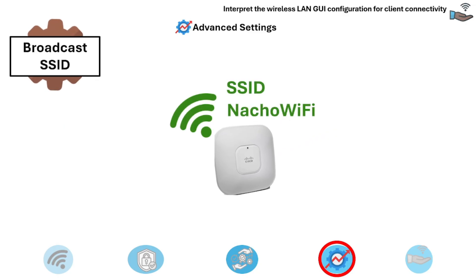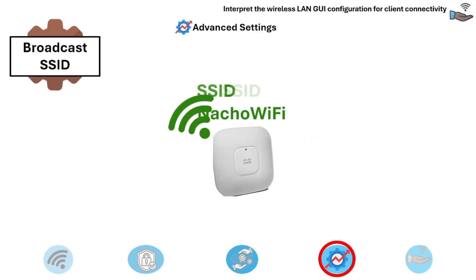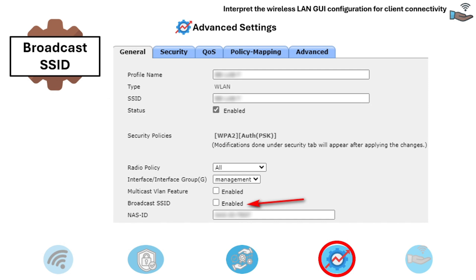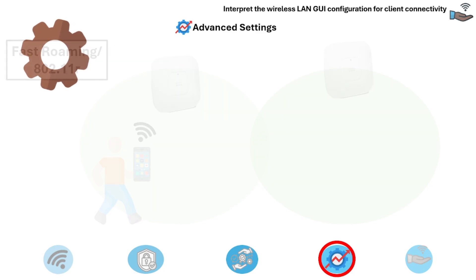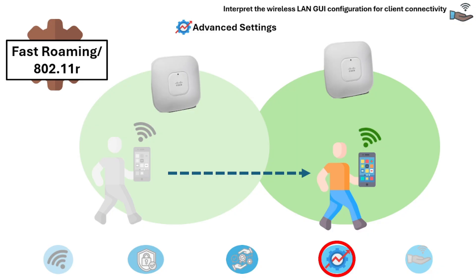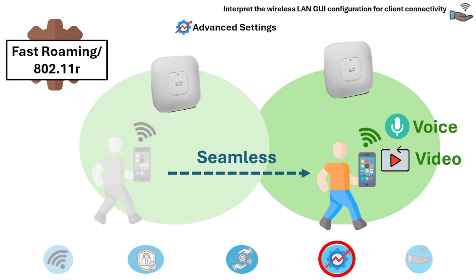Next is Broadcast SSID, a setting that enables or disables SSID visibility — for example, hiding the SSID on the Cisco Wireless LAN Controller by unchecking 'Broadcast SSID enabled.' Next is fast roaming, or 802.11r, which allows devices to quickly transition between access points. This is important for latency-sensitive applications such as voice over IP and video conferencing, reducing roaming delays for continuous connections.